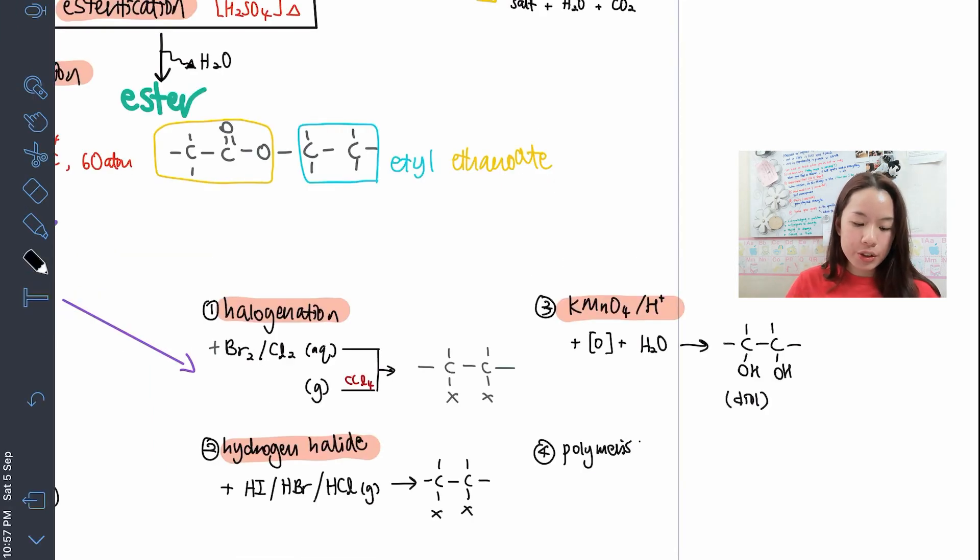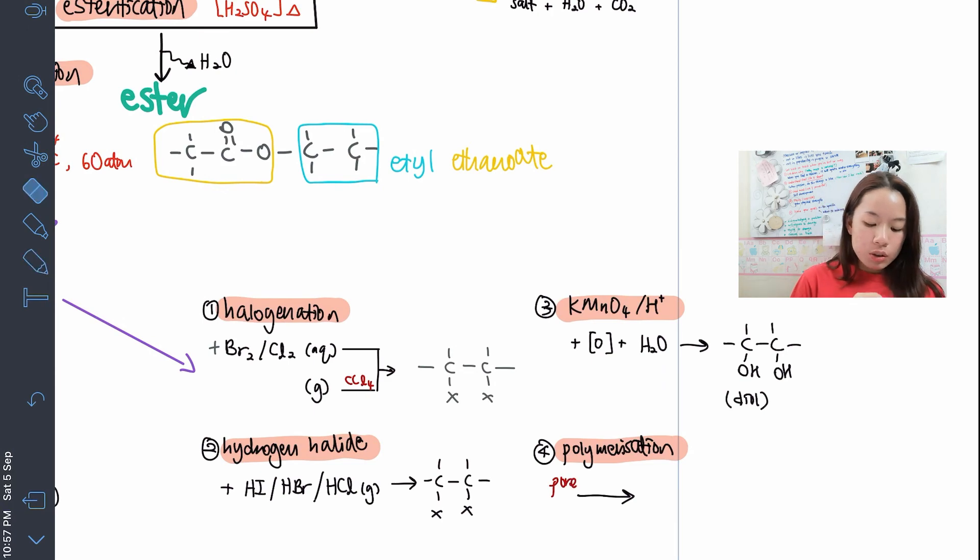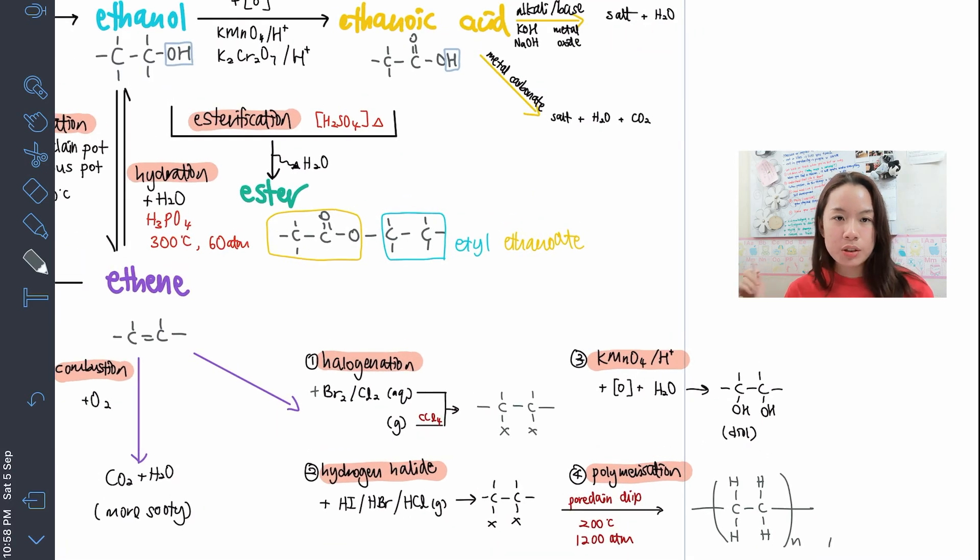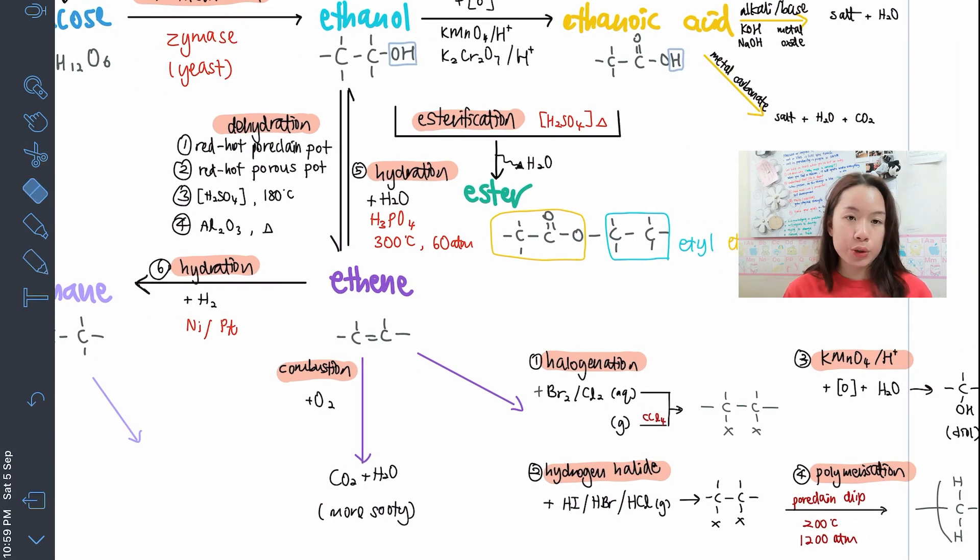Next is polymerization. Polymerization is how you change from monomer become polymer. So it's through porcelain chip, in the condition of 200 degrees Celsius and 1,200 atm. So how you remember this is 200, 200. Like just now that one is 3-6-0, 3 and 6 is like san er liu, 3 times 2 equals to 6. So 360. Well now it's 200, 1,200. So it will form from ethene become polyethene. The other two addition reactions would be hydration and hydrogenation.